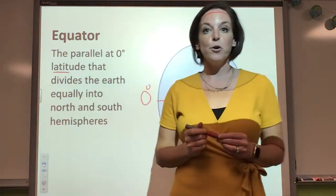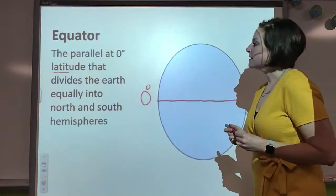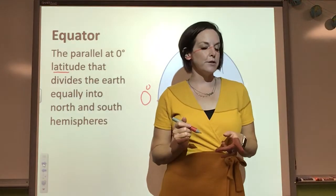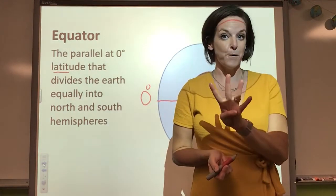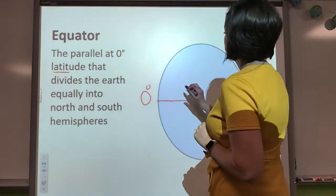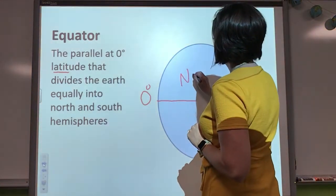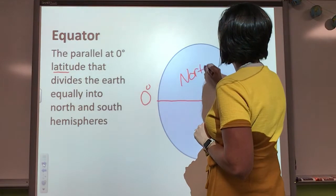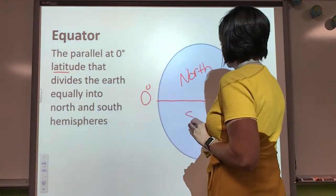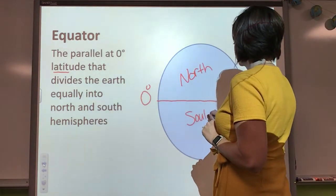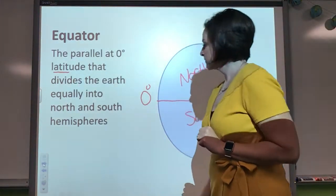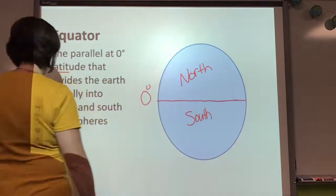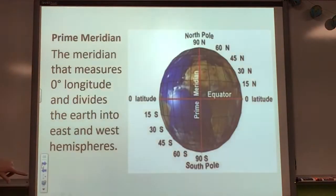And this is going to divide our Earth into the northern and southern hemisphere. So yesterday, you took that quiz, how many hemispheres does our Earth have? And we actually have four. So the equator divides the north and the south.